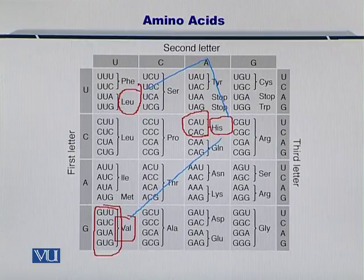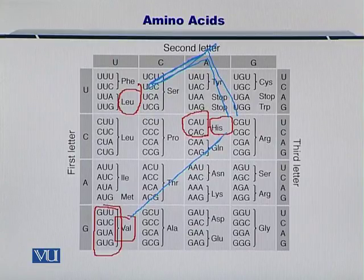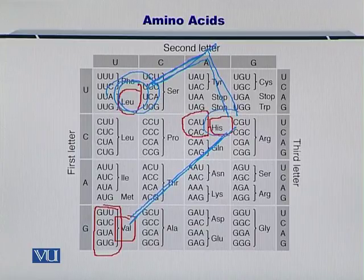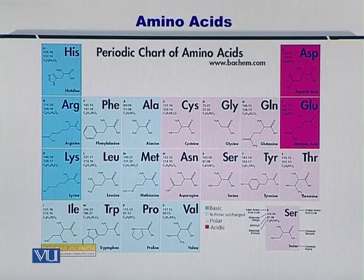So in this way, your amino acids come together in a chain, and this chain is the beginning of the formation of a protein. In all, there are 20 amino acids.